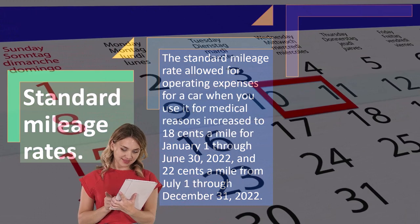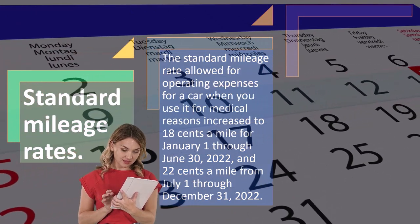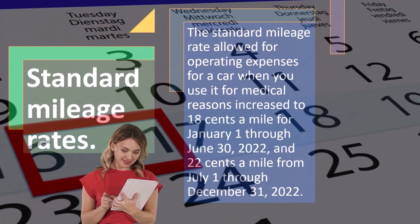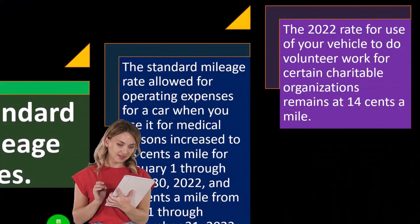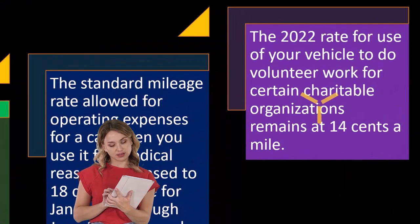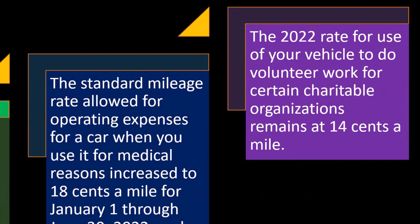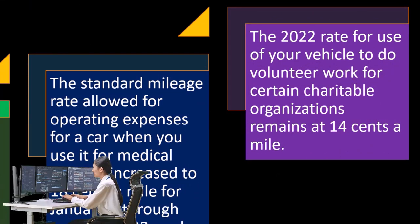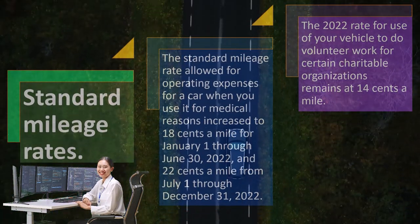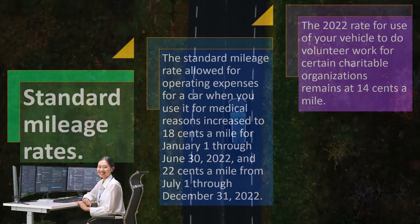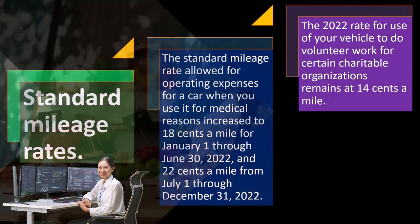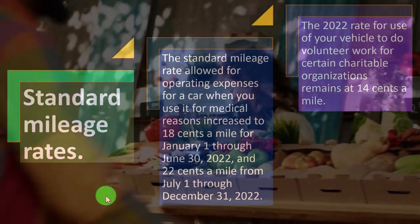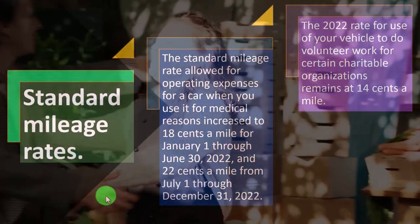The mid-year change in medical mileage rates complicates calculations — tax software is often helpful there. The 2022 rate for using your vehicle to do volunteer work for certain charitable organizations remains at 14 cents per mile, which hasn't been increasing as steadily as business mileage rates. Business mileage rates for sole proprietorships will be covered separately in the Schedule C discussion.